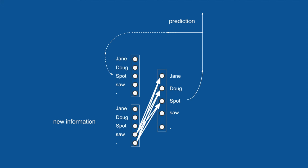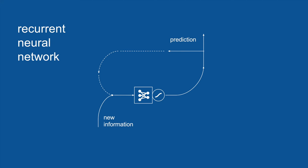And by a similar method, any time we come across the word saw or a period, we know that a name has to come after that — so it will learn to vote very strongly for a name: Jane, Doug, or Spot. So in this formulation, we have a recurrent neural network. For simplicity, I'll take the vectors and the weights and collapse them down to that little symbol with the dots and the lines connecting them.